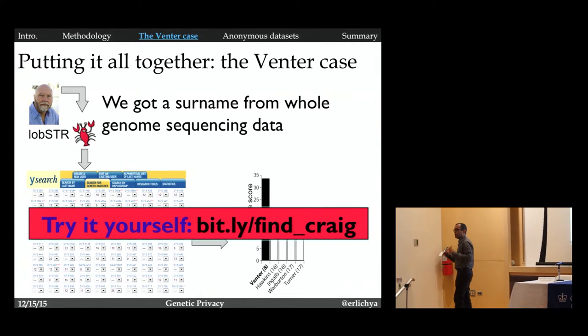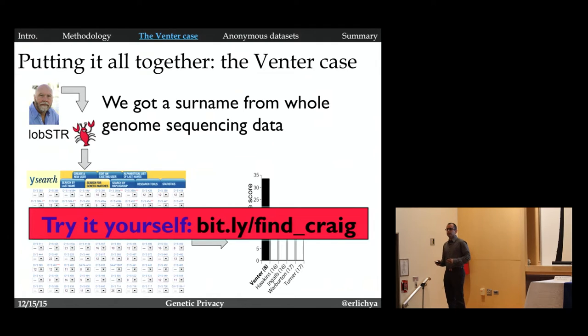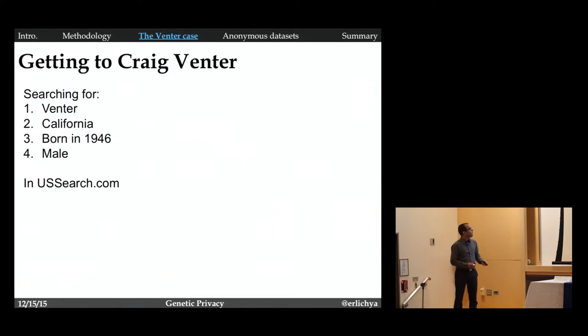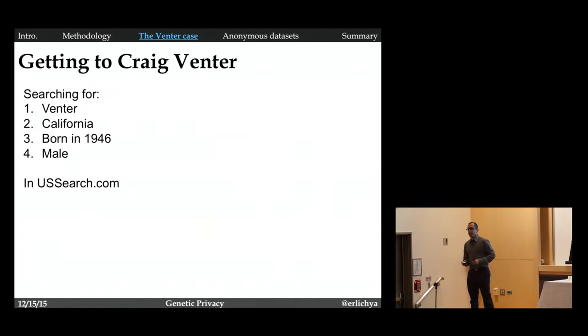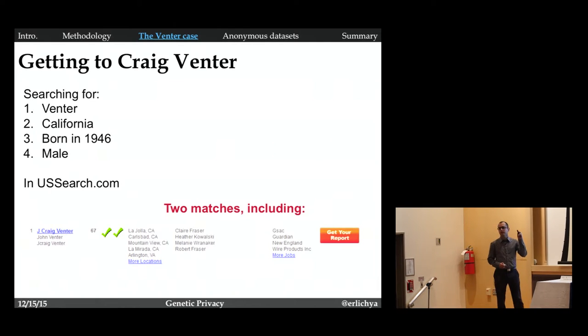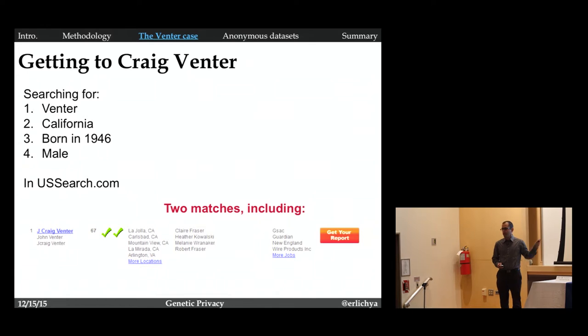Let me just summarize this slide. We got a surname from whole genome sequencing data from a public resource. But we got Venter, right? And the question, can we get to Craig Venter? So we took this surname Venter, and then we said, okay, we know that this guy lives in California, was born in 1946, and is a male. We put all this information in ussearch.com. This is a public record search engine. I just showed you how we can go all the way from whole genome sequencing data to the identity of someone, Craig Venter.